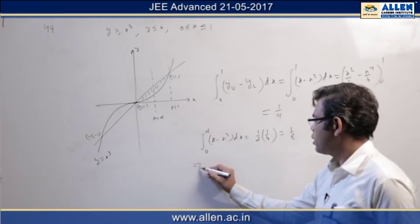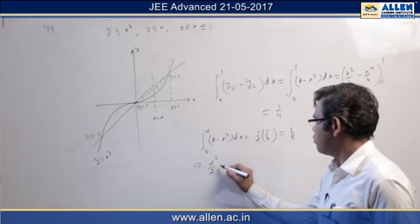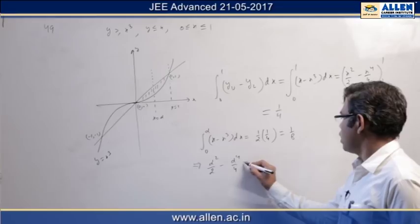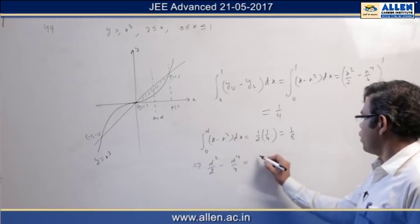So if we integrate this, we will get α²/2 minus α⁴/4 equal to 1/8.